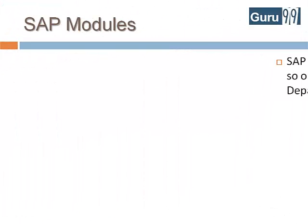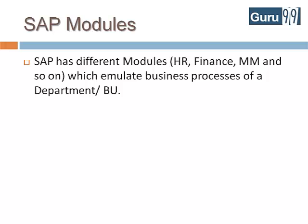One way to achieve this flexibility is to break the SAP system into different modules, like HR, Finance, and so on, which emulate the business processes of that particular department or business unit.